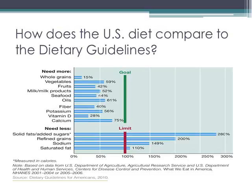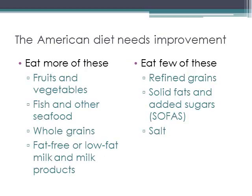So how does the U.S. diet actually compare to the guidelines? We're not doing very well. We need to increase our intake of foods like fruits, vegetables, and whole grains, as we're well below the goal. Whereas things like solid fats, added sugars, refined grains, sodium, and saturated fat — we're consuming well above the limit. In short, we need to eat more fruits and vegetables, fish and seafood, lean protein, whole grains, and more fat-free or low-fat dairy, and eat fewer refined grains, solid fats, and added sugars — also referred to as SoFAS — and less salt.